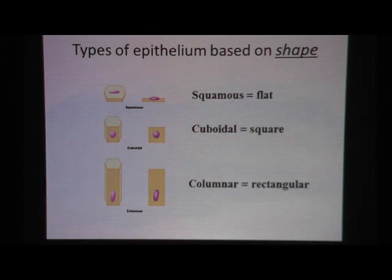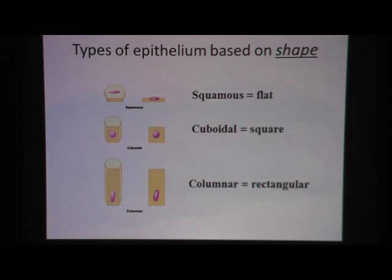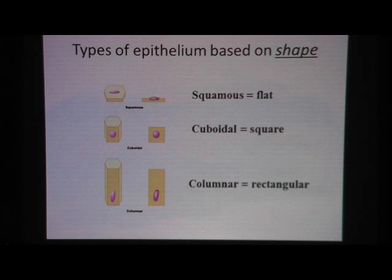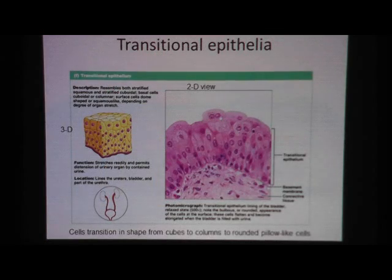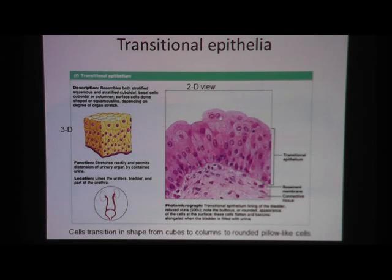Another way of looking at the epithelium is looking at the shape of the cell. If the cell is predominantly squished, then we call it squamous. If it looks like squares, then we call it cuboidal. And if the cell is more rectangular, then we call that columnar. But once again, transitional epithelia is a mixed bag, and it doesn't really fit nicely into the scheme of naming things.